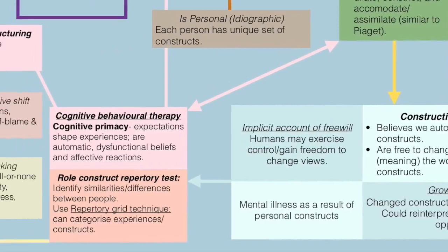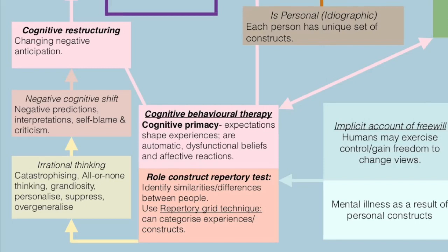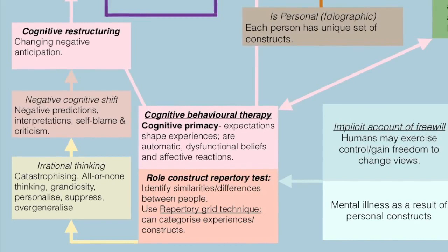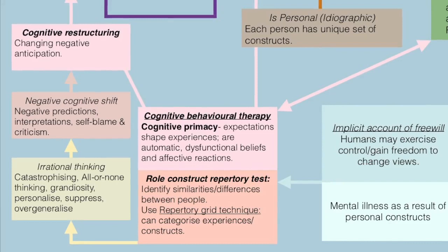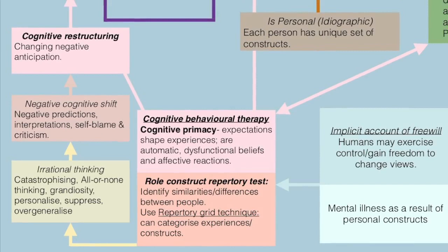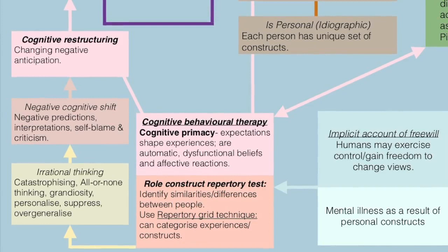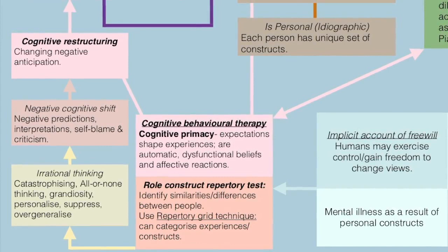Kelly developed a role construct repertory test which identified similarities and differences between people, using a repertory grid technique that could categorize experiences or constructs. This was used to assess personal constructs and would later be used in cognitive behavioral therapy, which emphasized cognitive primacy — where expectations shape experiences are automatic and dysfunctional beliefs and affective reactions inform negative expectations or constructs.